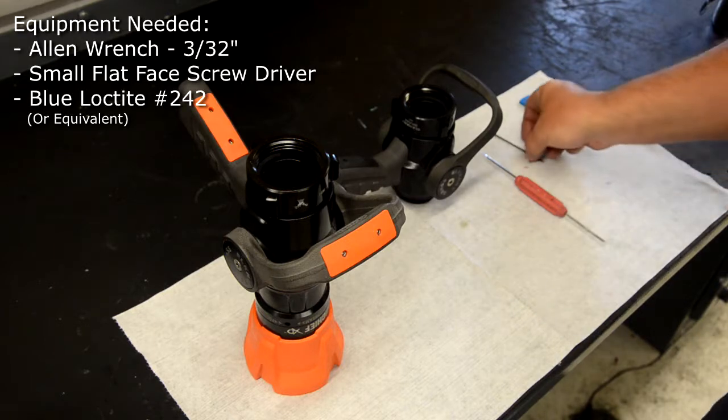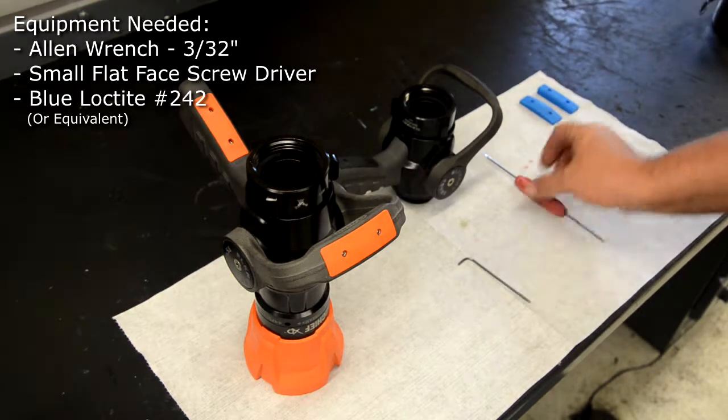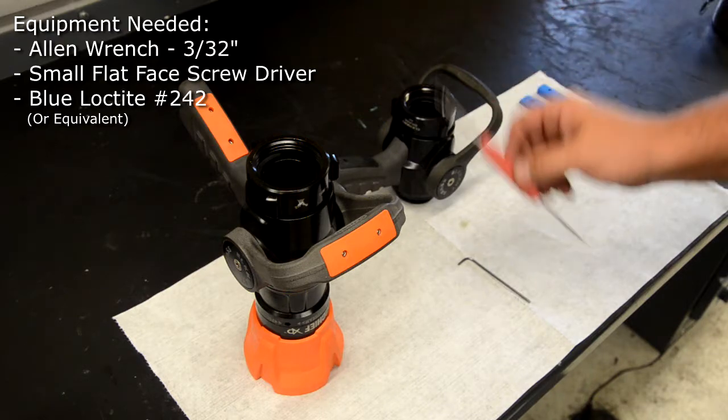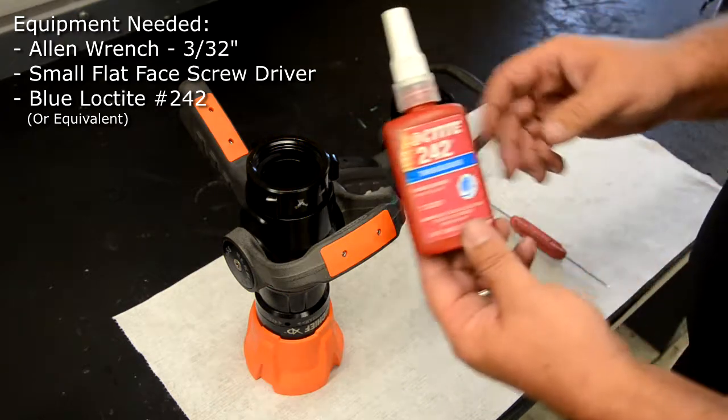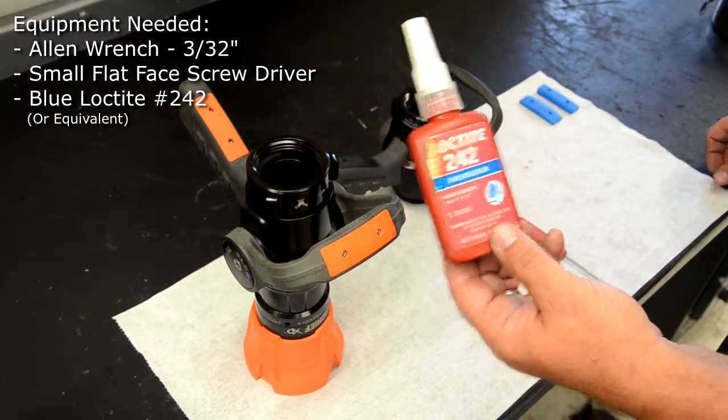Tools you'll need for this project are a 3/32 inch Allen wrench, a small flat face screwdriver, and blue Loctite number 242 or equivalent.